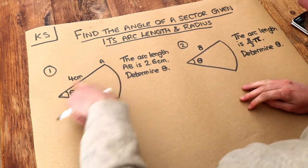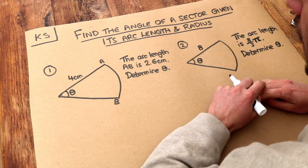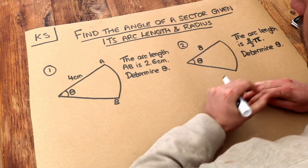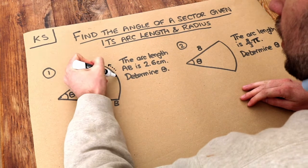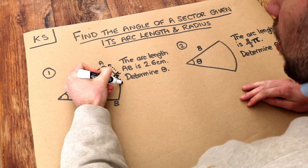Now remember that a pizza slice like this is known as a sector of a circle, so it's just a portion of a circle. And remember that this length here, this curve length, is known as an arc.